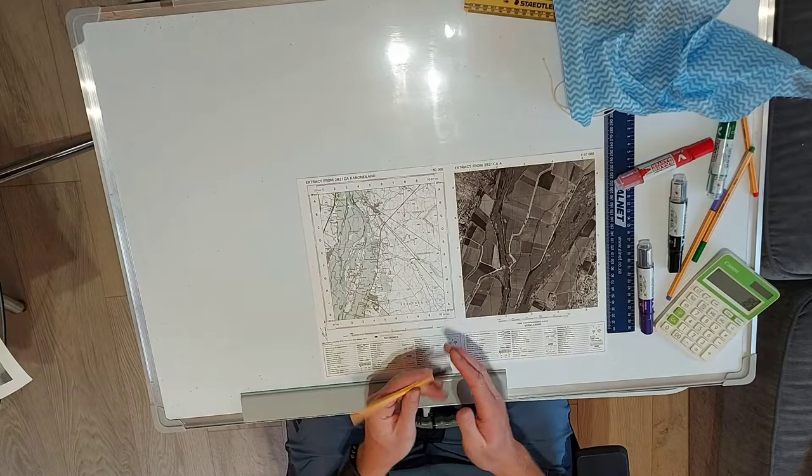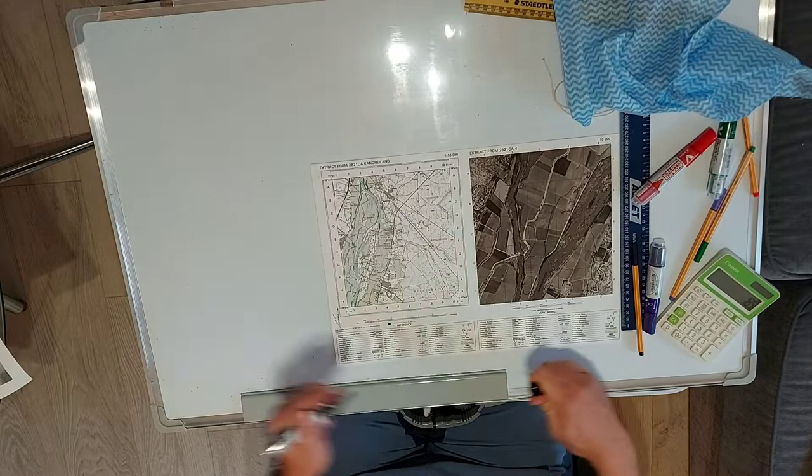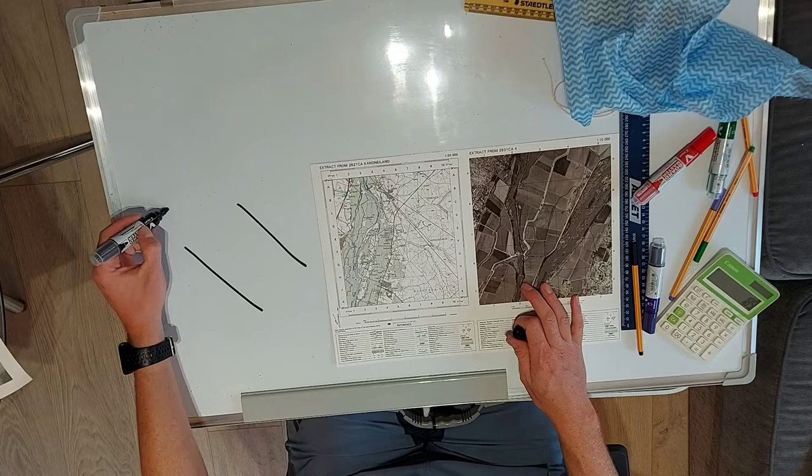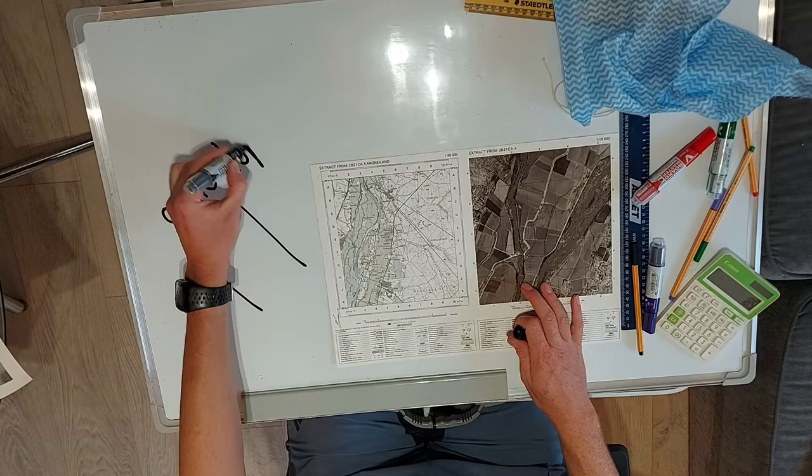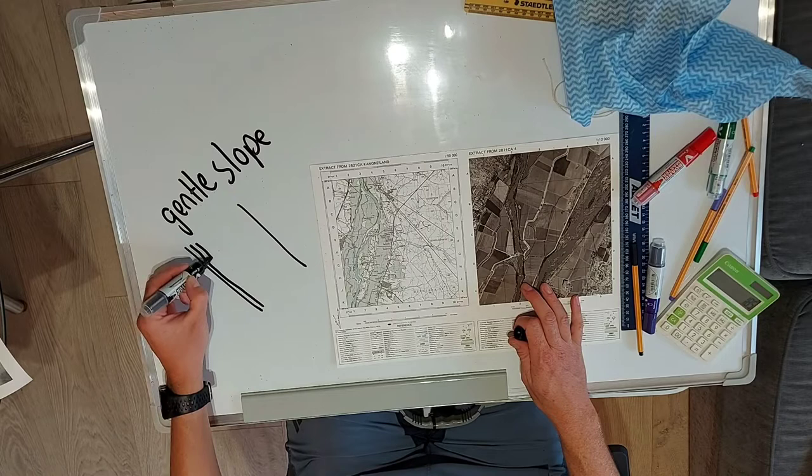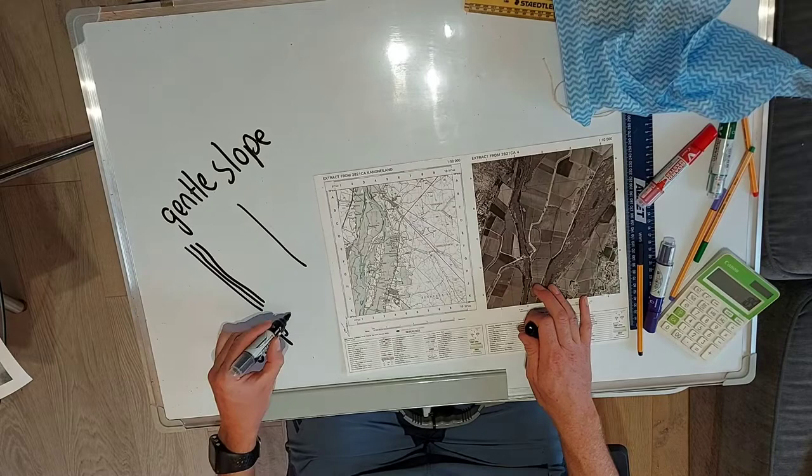Sometimes contour lines can be very close to one another, which means we have a steep slope. If the contour lines are far apart, then it is a gentle slope. If the contour lines are close to one another, it is a steep slope.